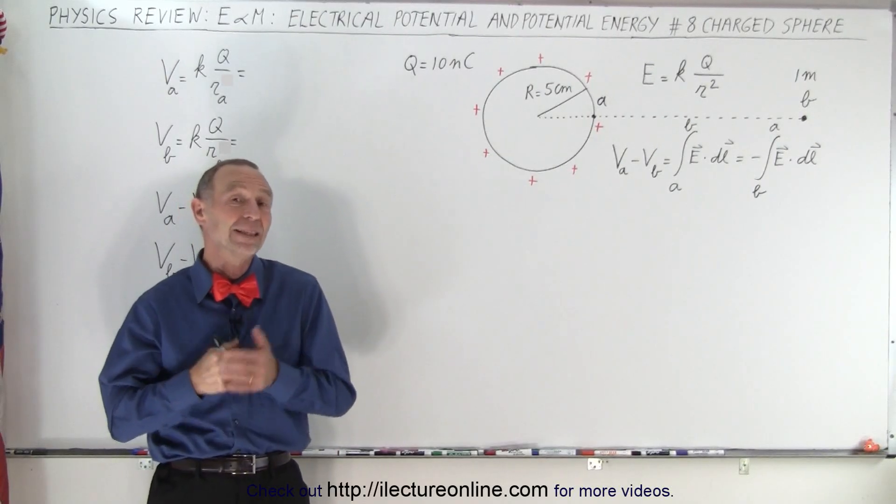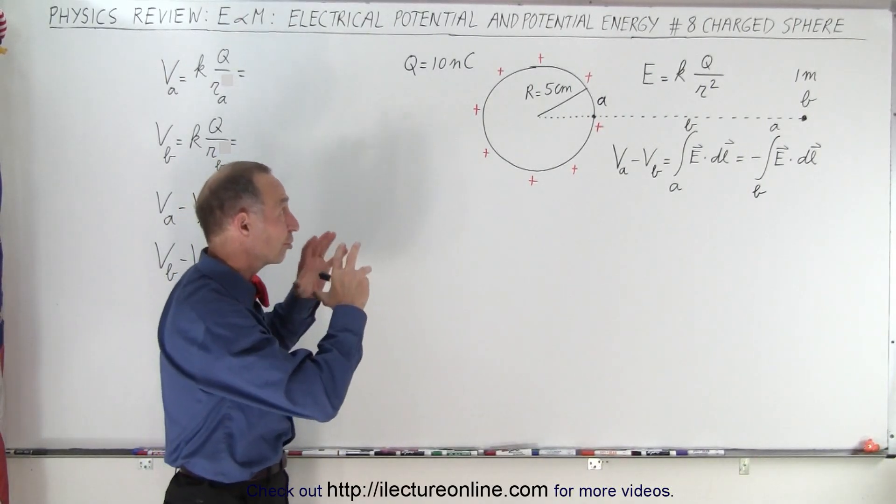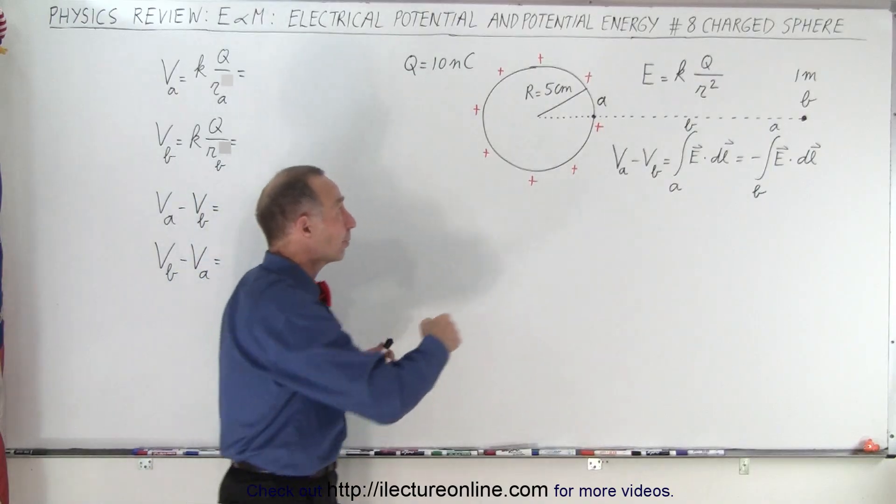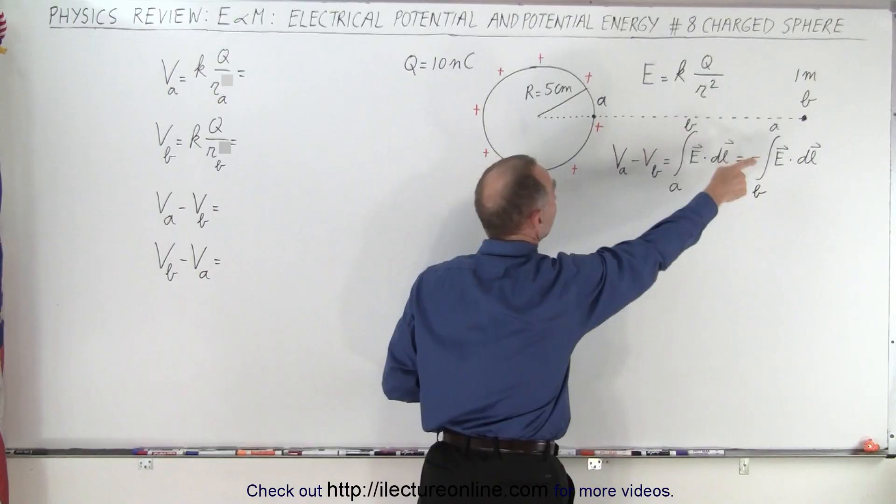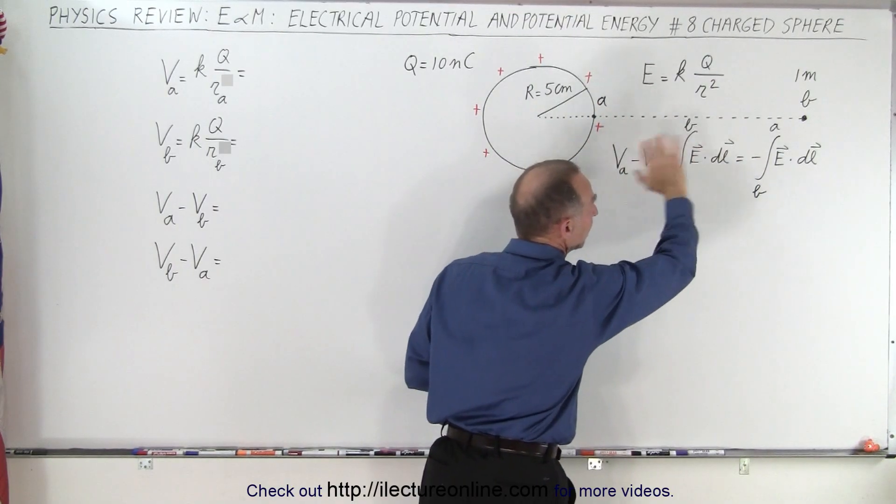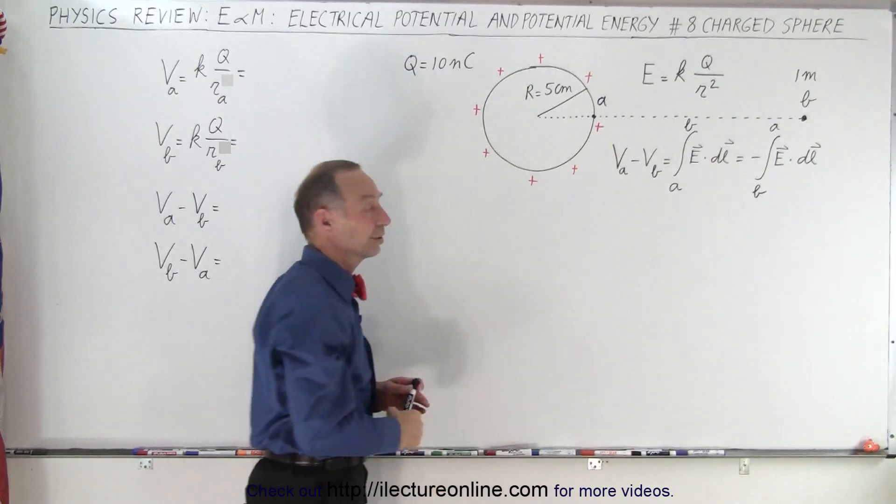Welcome to Electronline. In this video, we're going to look at a charged sphere and calculate the voltage outside the sphere at two different points, point A and point B. Point A is right on the outside surface of the sphere, and point B is one meter away from the center of the sphere.